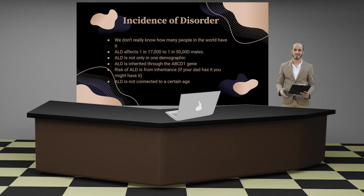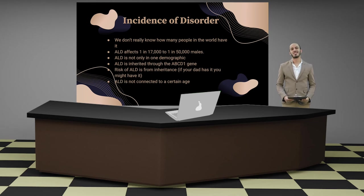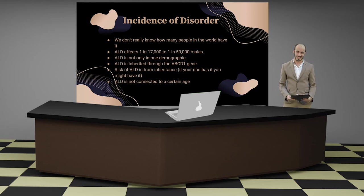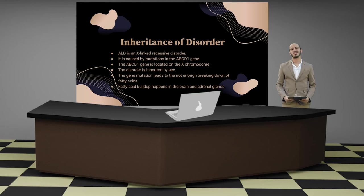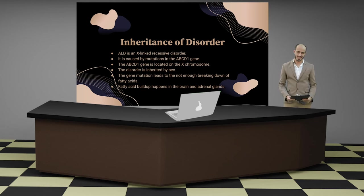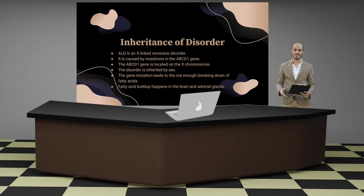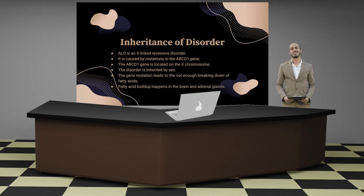The exact global prevalence is not well established, but ALD affects approximately 1 in 17,000 to 1 in 50,000 males. ALD is not limited to one demographic and is inherited through the ABCD1 gene. Risk comes from inheritance — if your father has it, you may have it. ALD is not connected to a certain age. It is an X-linked recessive disorder; the ABCD1 gene is located on the X chromosome, and the gene mutation leads to insufficient breakdown of fatty acids, with buildup occurring in the brain and adrenal glands.